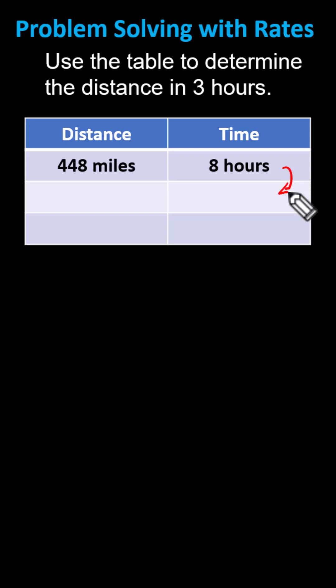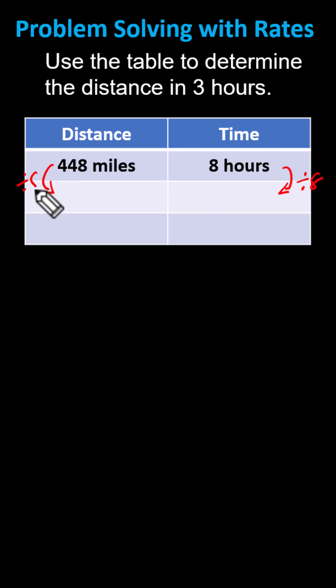So again, we'll divide eight hours by eight, and we'll divide 448 miles by eight. As long as we multiply or divide both the distance and time by the same value, we get an equivalent rate. Eight hours divided by eight equals one hour, and 448 miles divided by eight equals 64 miles.